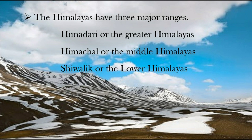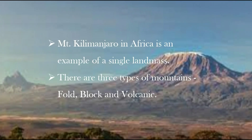Keep in mind that there are two kinds of mountains: a long range of mountains, or a mountain as a single landmass. The Himalayas are an example of a chain of mountains, while Mount Kilimanjaro in Africa is an example of a single landmass. There are three types of mountains: fold mountains, block mountains, and volcanic mountains. We are going to deal with those in the next video class. Please go through this lesson once again — be safe at home, and thank you. We will meet in the next video.